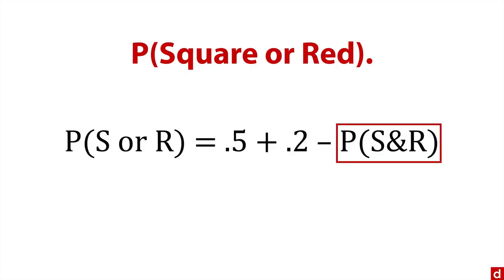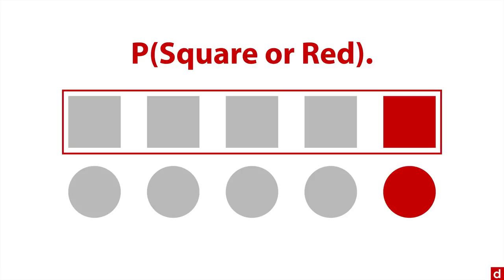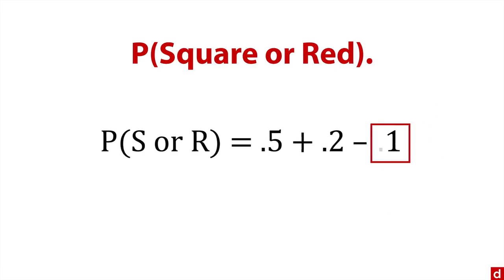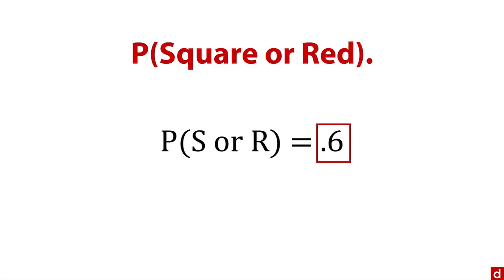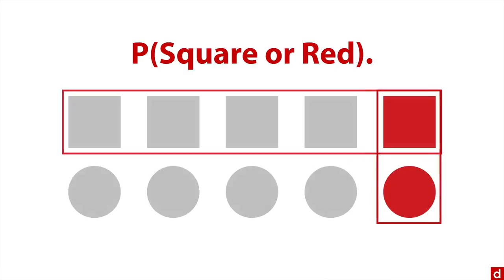The trick is the overlap between these two categories. Do we have anything that is both square and red? Because we don't want to count that twice, so we have to subtract it. Looking at our sample space, there's one shape that meets both criteria—one out of 10. So we have 1/10, which equals 0.1. We do the addition and subtraction: 0.5 + 0.2 - 0.1 = 0.6. This means there's a 60% chance of an object being square or red. You can see six shapes outlined, which is the visual interpretation that lines up with the mathematical calculation.